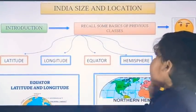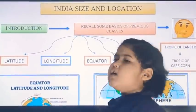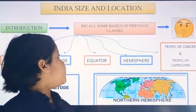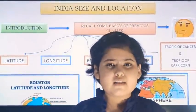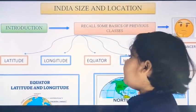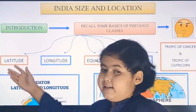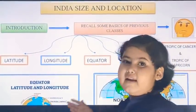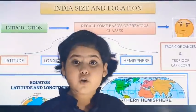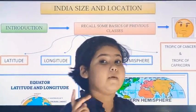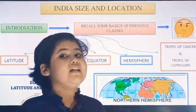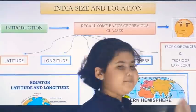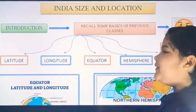We will recall some basics from our previous classes. These basics include what is latitude, what is longitude, what is the equator, and what is a hemisphere. You also know that there are two more important latitudes: the Tropic of Cancer and the Tropic of Capricorn.